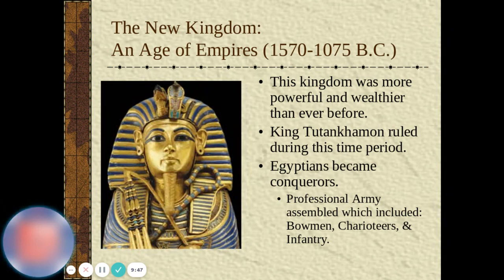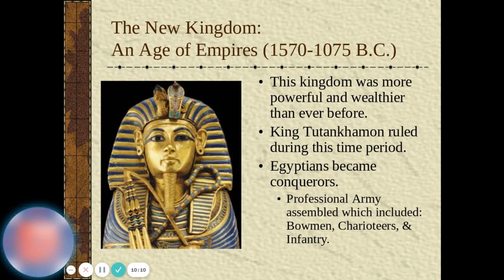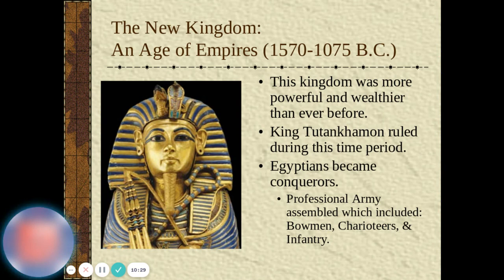This New Kingdom was a 500-year period when Egypt was more powerful and wealthier than ever before. King Tutankhamun ruled during this time. Egyptians became conquerors with professional armies that included bowmen, chariots, and infantry. Just like today with presidents, some pharaohs greatly improved the economy and country while others caused it to decline — which is often when wars started.